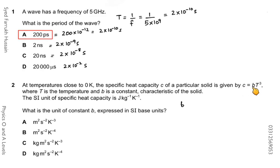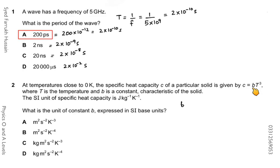In the next question, you are given the equation c = b·t³, where c is heat capacity with SI unit joule per kilogram per kelvin, and t is temperature with SI unit kelvin. We need to find the SI base units for b. When finding the unit for a variable that is not the subject, the first step is to make it the subject: b = c / t³.